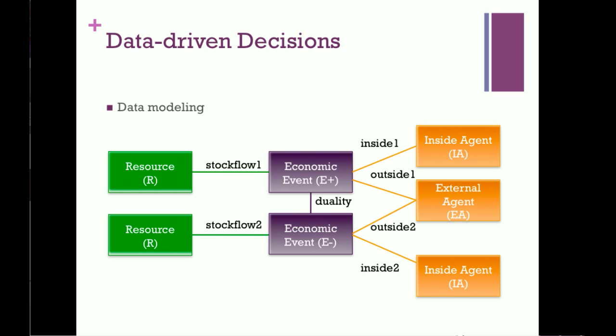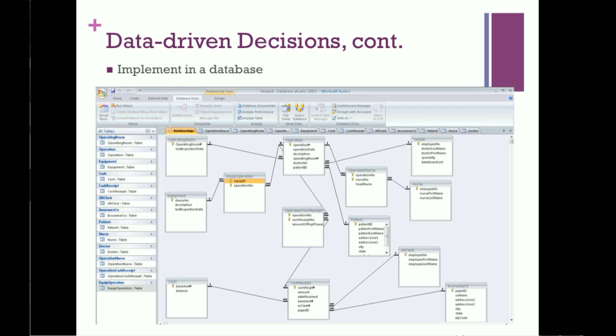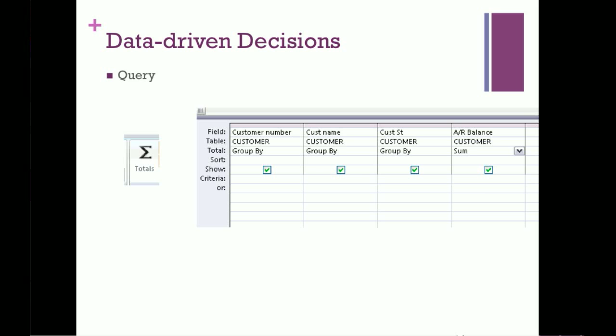In fact, the REA models that we developed in module one will become the foundations for the data modeling in this module. So we'll learn how to model data using UML diagrams, which this is an example of. And then we'll turn those UML diagrams into databases, but we're going to use Access as the tool for that. Organizations frequently run on much larger databases, but if you understand the concepts in Access, you'll understand the concepts in other systems.